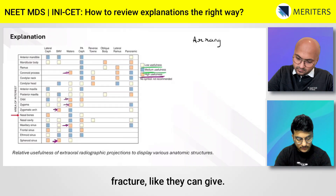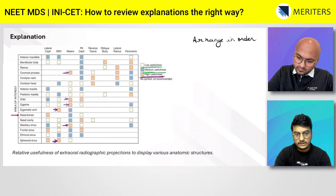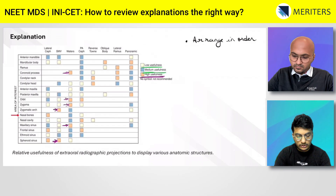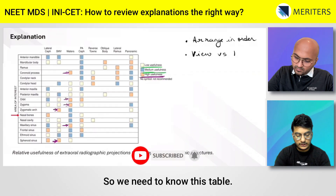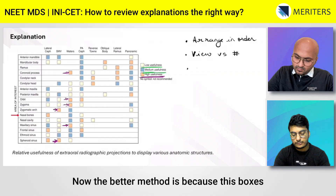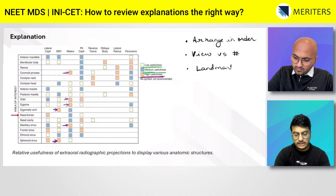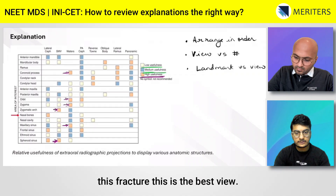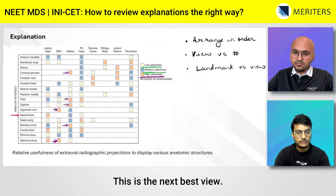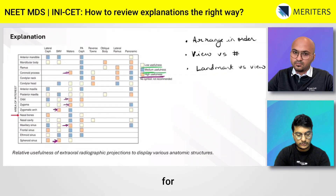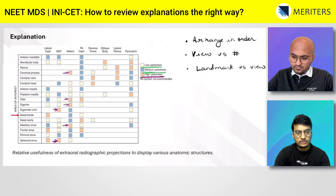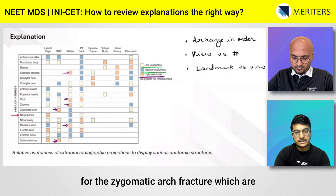From this table, two types of questions are possible: one could ask you to arrange views from high to low usefulness for a particular fracture — for example, for zygoma fracture. The other type asks which is the best view for Waters view or for zygomatic arch fractures. The better method, since the color-coding can get confusing, is to write out that for a specific fracture, this is the best view, this is the next best, and also do the reverse — for which fractures is Waters view best.